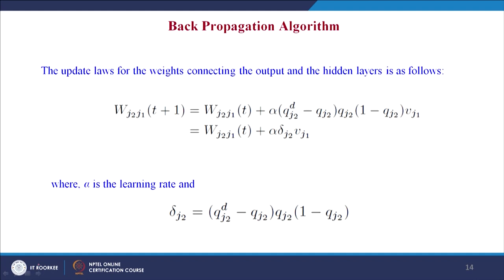The update rule for the weights connecting the output and hidden layer is: W(J2,J1)(t+1) = W(J2,J1)(t) + α × [Q(J2,D) − Q(J2)] × Q(J2) × (1 − Q(J2)) × B(J1). Simplified, alpha is the learning rate and delta(J2) = [Q(J2,D) − Q(J2)] × Q(J2) × (1 − Q(J2)), which is the error propagated from the output region to the hidden region.